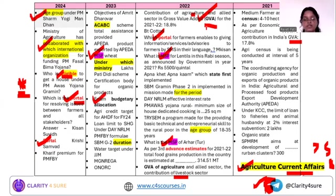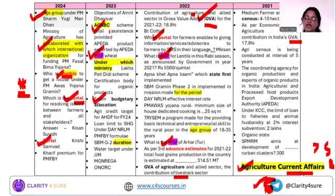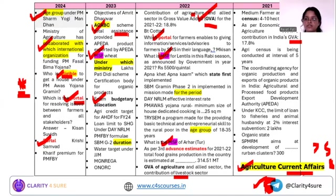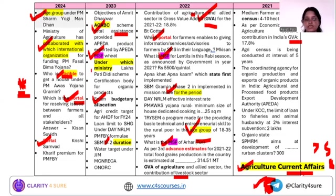Schemes with NABARD involvement are important — ACADC, PACS digitization, and the 10,000 FPO scheme. These are really important because NABARD is involved in those. Other things asked from schemes include the period of implementation, duration for which it is being implemented, age group, and under which ministry a particular scheme falls.